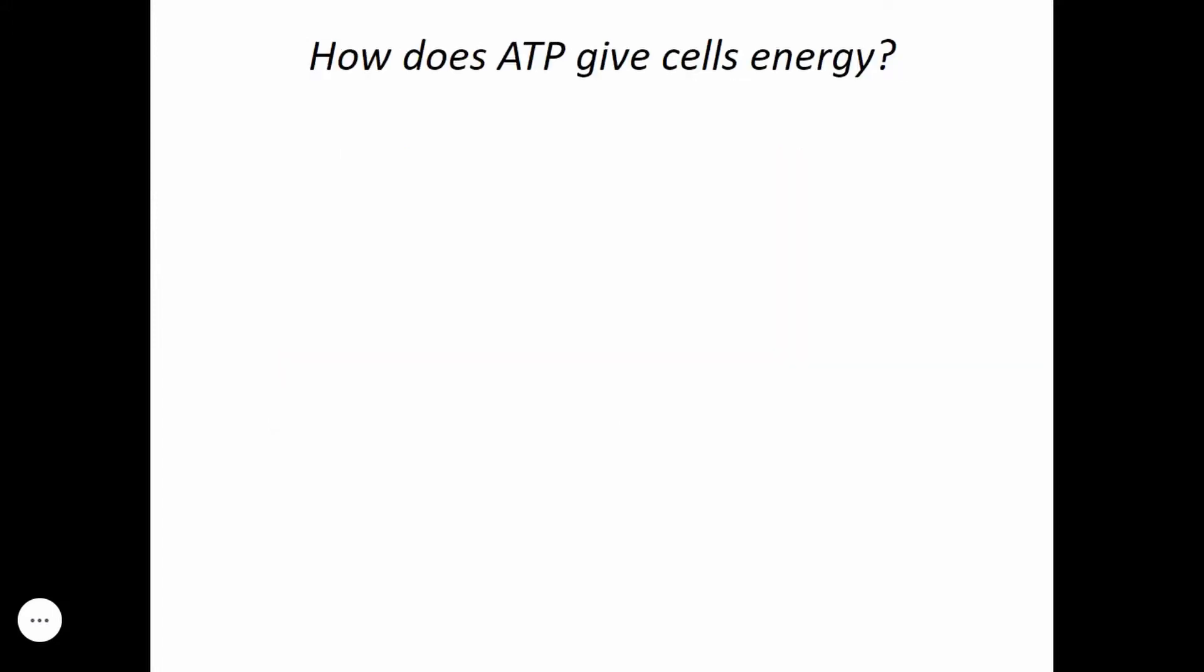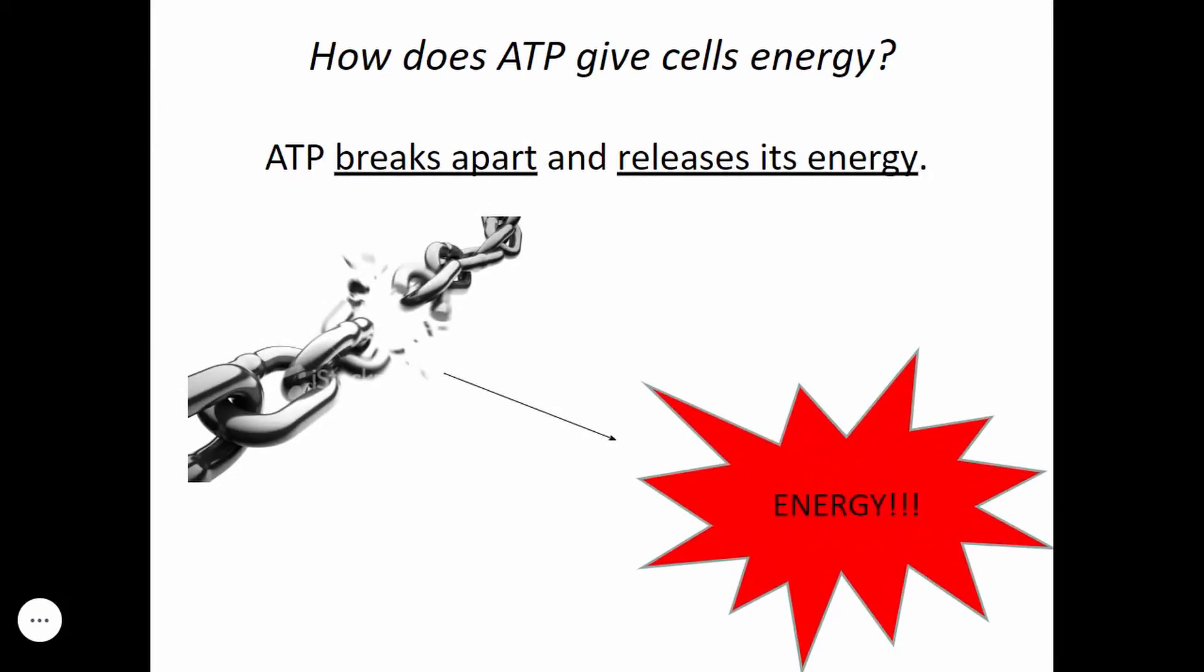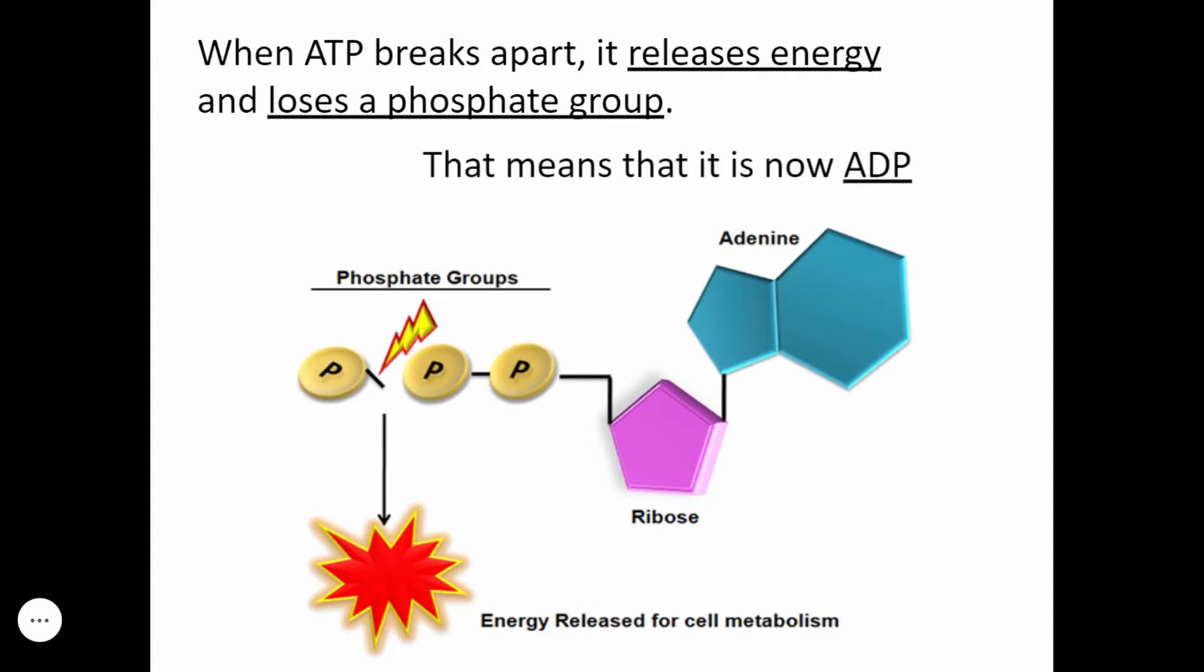How does ATP exactly give cells energy? ATP is going to break apart and release its energy. When ATP breaks apart, it releases energy and loses a phosphate group. That means that it's now ADP.